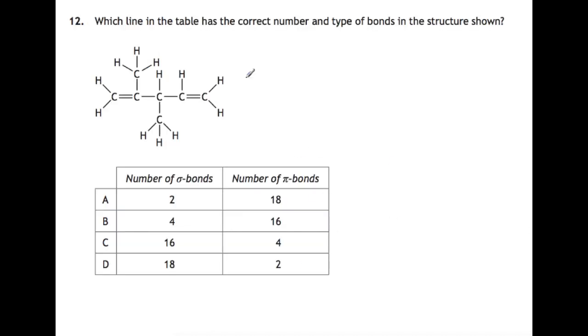Looking at question 12, which line in the table has the correct number and type of bonds in the structure shown? All single bonds are sigmas, and all double bonds are one sigma plus a pi. This is where I would start and just have a look and go, how many pi bonds do I have? We've got two double bonds, so we've got two pi bonds, which means that it must be D. If we count up the sigmas, we've got 1, 2, 3, 4, 5, 6, 7, 8, 9, 10, 11, 12, 13, 14, 15, 16, 17, 18. So it is in fact D because we've got 18 sigmas and 2 pi.